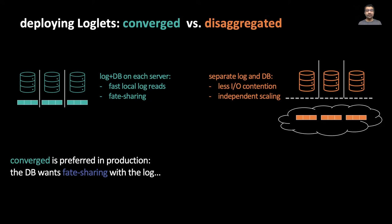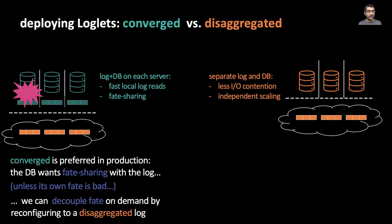In production, we typically run in converged mode since our target applications need a zero dependency store. There is, however, one exception. The DB tier needs only one replica to be alive while the log needs a full majority. Sometimes, if enough DB replicas fail, we're close to losing quorum on the co-located log, which can result in data loss. In such situations, which happen often in production, we can decouple the log from the database by reconfiguring to an external log.